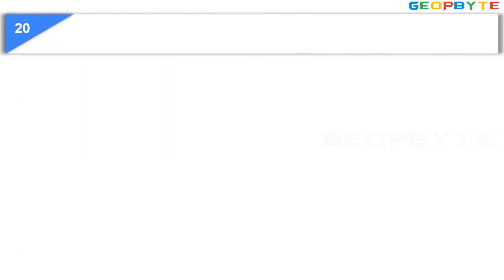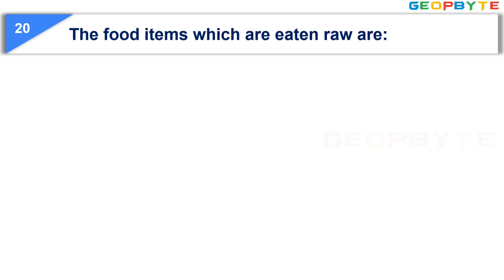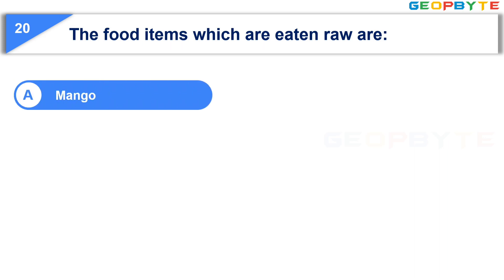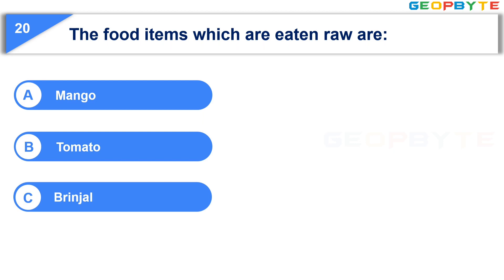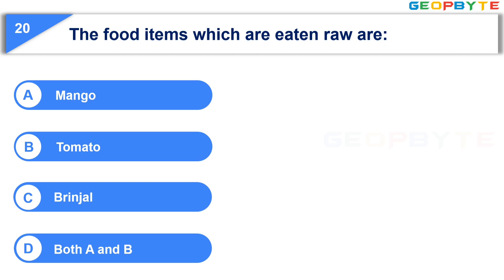The last question is: The food items which are eaten raw are. Option A, Mango. Option B, Tomato. Option C, Brain Jol. Option D, Both A and B. Your time starts now.